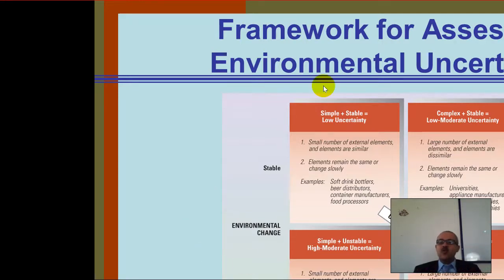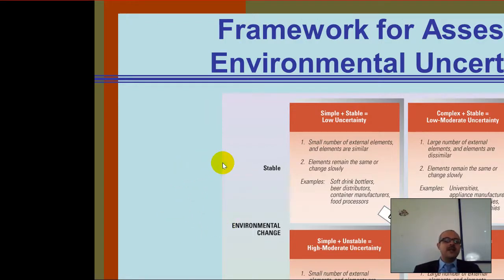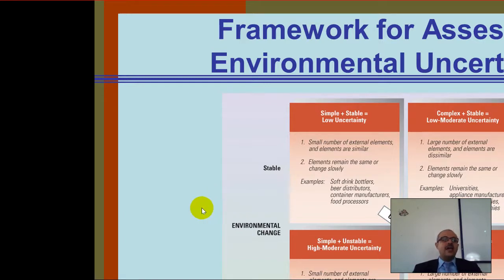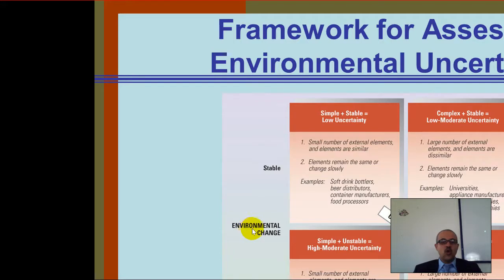This represents low to moderate uncertainty. Other examples include insurance companies, chemical companies, and appliance manufacturers. Now, in the next box, we have simple plus unstable. Simple means a small number of external elements that are also similar, but those elements change very frequently and unpredictably. Examples here are e-commerce, fashion, music, and toy manufacturers.